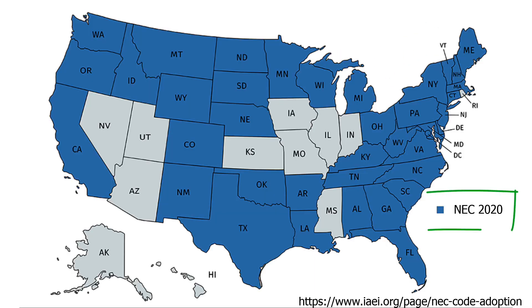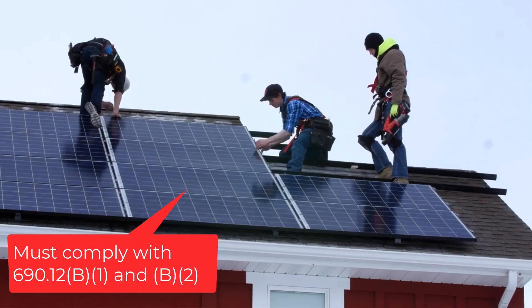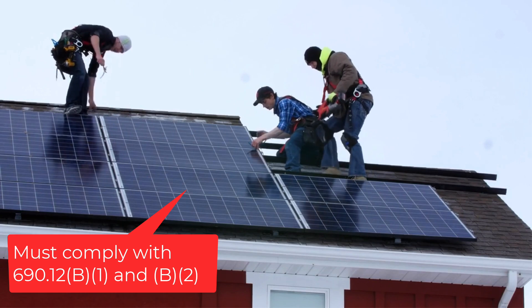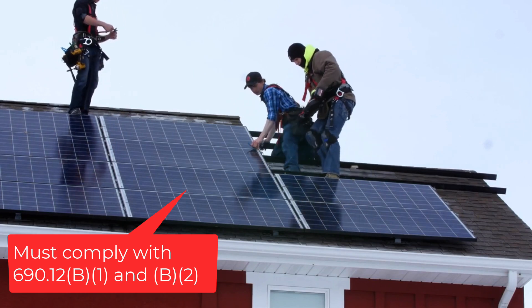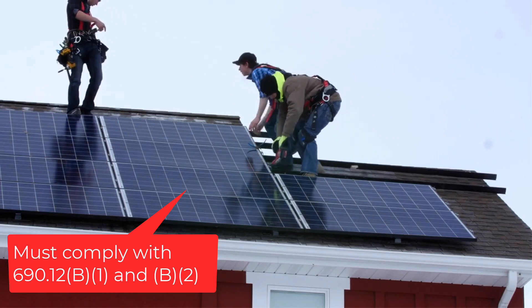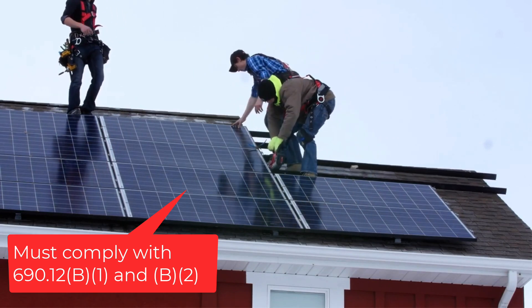Let's take a look at the 2020 code requirements for rapid shutdown. Rooftop systems in the United States must comply with both 690.12 B1 and B2.